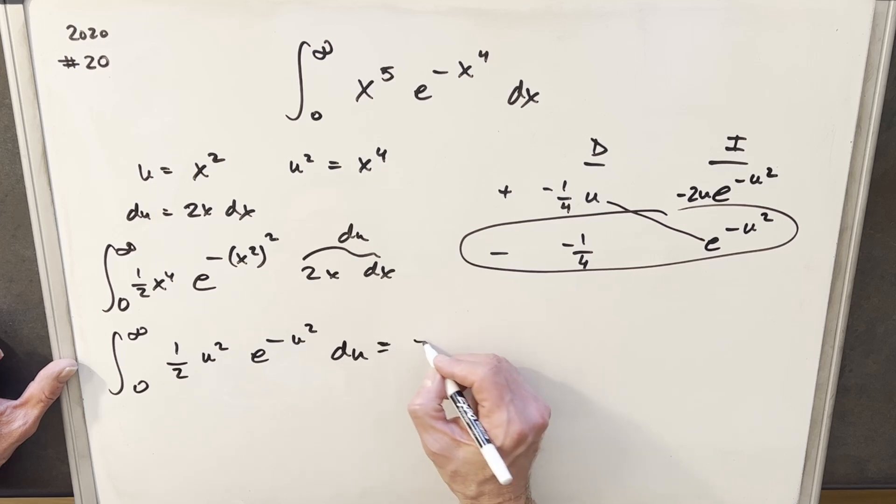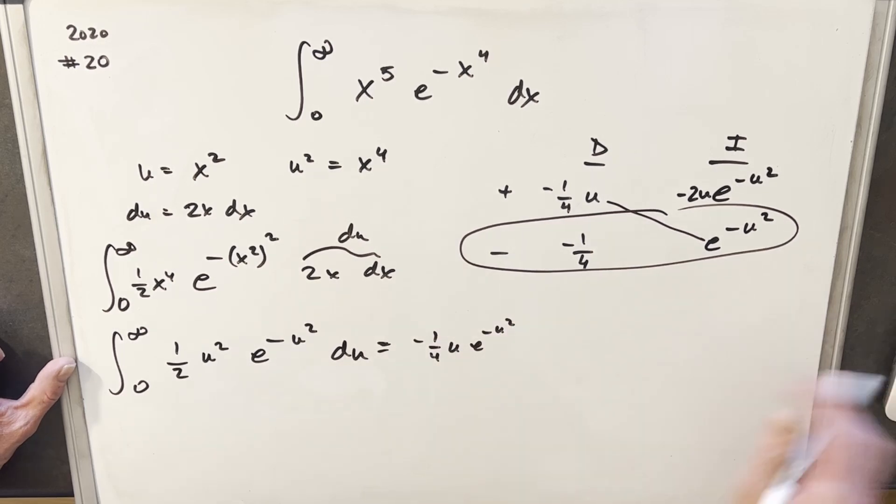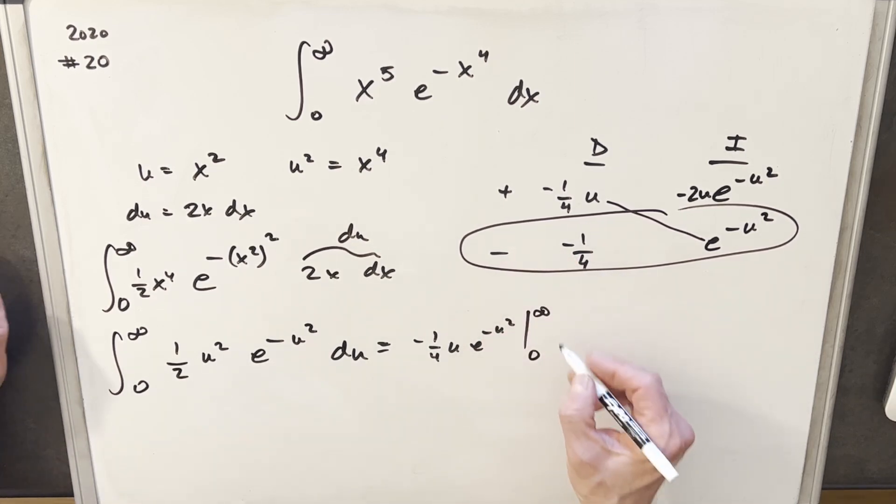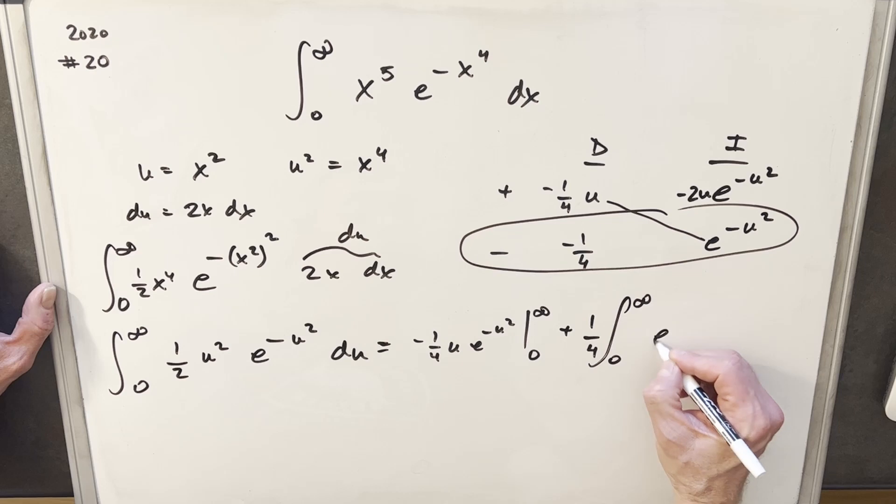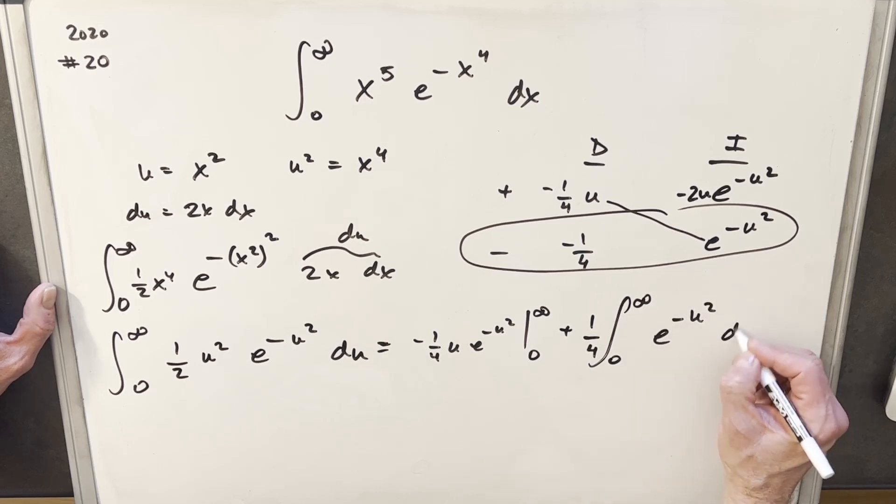So let's see what we have. We're gonna have minus 1 fourth u e to the minus u squared. This is going to be evaluated from 0 to infinity and here the minus times minus is going to cancel and we're going to have an integral. We're gonna have 1 fourth in front and we're gonna have from 0 to infinity e to the minus u squared du.